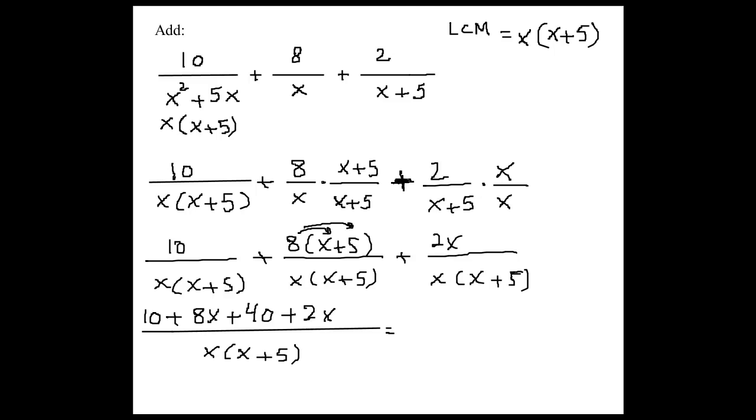So that's what we get. So somebody can tell me what the next step would be here. Over the microphone. Combine like terms. Very good. Combine like terms. So if we combine like terms, what do we get? Go ahead. 50 plus 10x. Good. So we can write 10x plus 50 or 50 plus 10x.